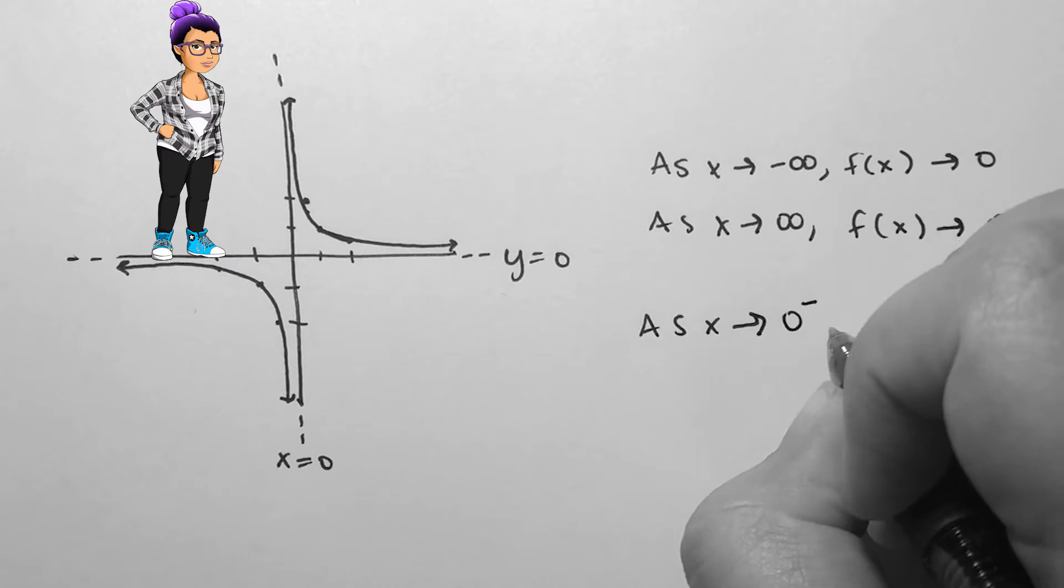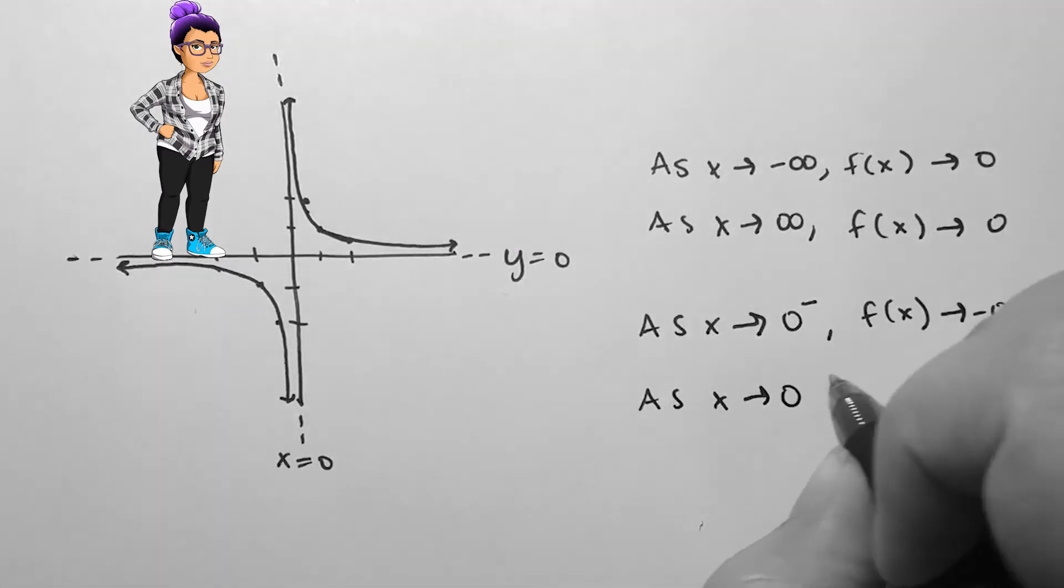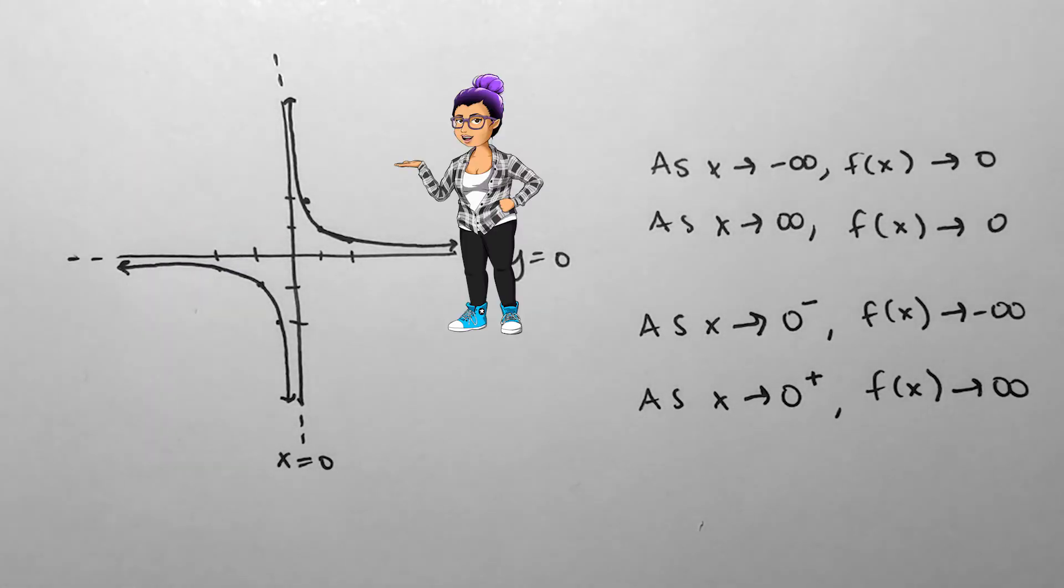We might also use arrow notation to describe the vertical asymptote. As x approaches 0 from the left, or negative side, f approaches negative infinity. As x approaches 0 from the right, or positive side, f approaches positive infinity.